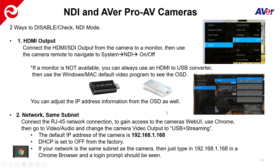There are two ways to check or disable NDI mode. The simplest, easiest way is using the HDMI output. Just connect the HDMI output to a monitor, then use your camera remote to navigate to System, select NDI, and select Off. Once you select Off, the camera will ask you if you want to reboot. Say yes, and it takes roughly about a minute and a half for the camera to reboot and come back.